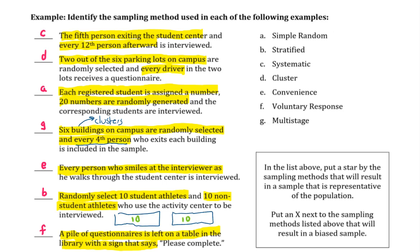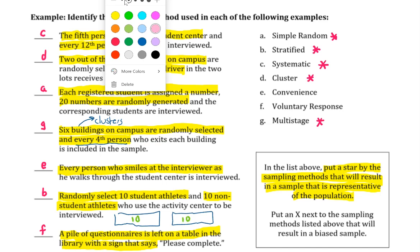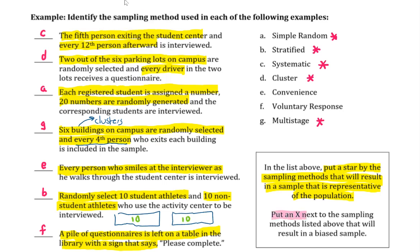Okay. The last thing we would like to do with this example is out of this list, put a star by the sampling methods that will result in a sample that is a representative of the population. So ones that are representative of the population would be a simple random sample, a stratified sample, a systematic sample, a cluster sample, or a multi-stage sample. And then let's put an X next to the sampling methods above that will result in a biased sample. And those would be the convenience and the voluntary response sampling methods.